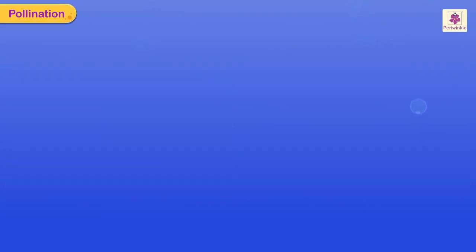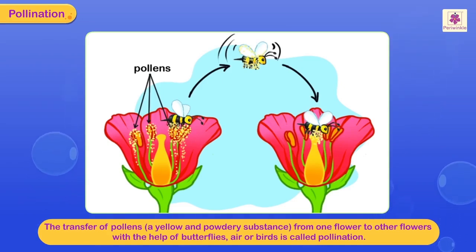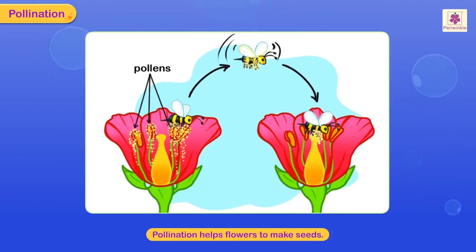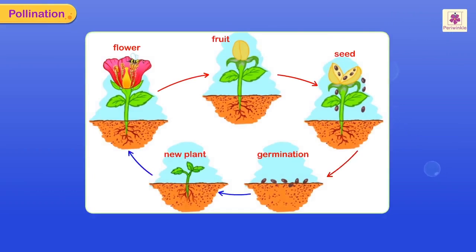Pollination is the transfer of pollen — a yellow and powdery substance — from one flower to other flowers of the same plant or other plants, with the help of butterflies, air, or birds. This helps flowers to make seeds. Most flowers grow into fruits, which hold the seeds of the plant, and the seeds grow into new plants.